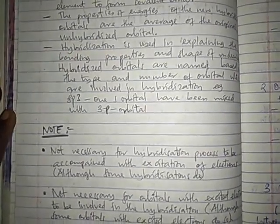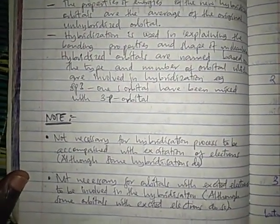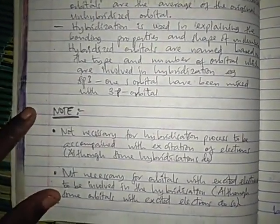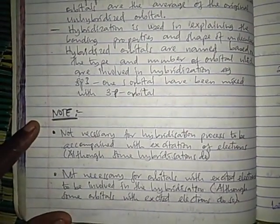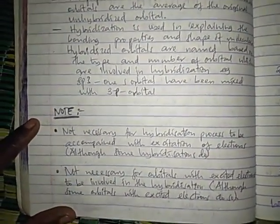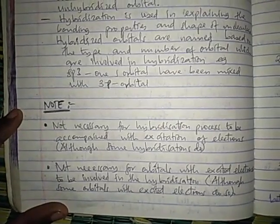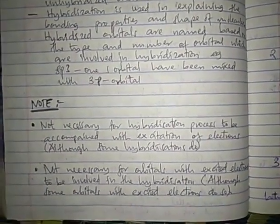There are some important points to note. Firstly, it is not always necessary for the hybridization process to be accompanied by excitation of electrons. Some hybridizations do involve excitation of electrons to a higher energy level, while others do not. Secondly, not all orbitals with excited electrons need to be involved in hybridization — some can be left out of the mixing process and remain with single electrons.